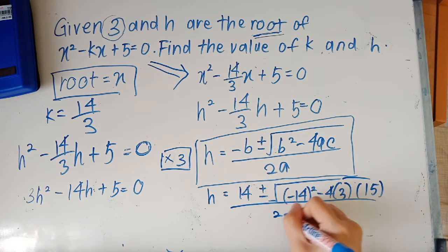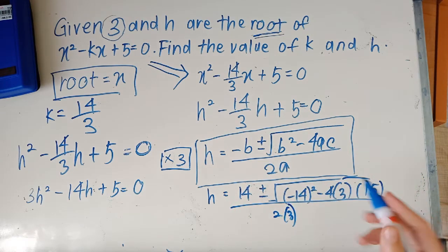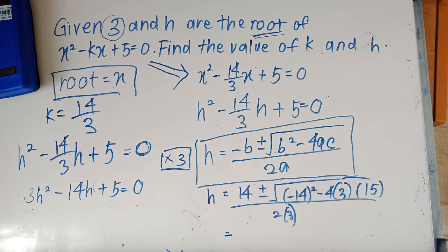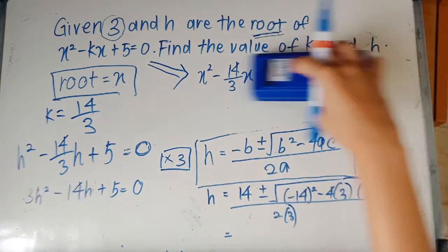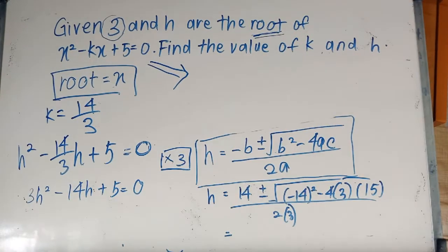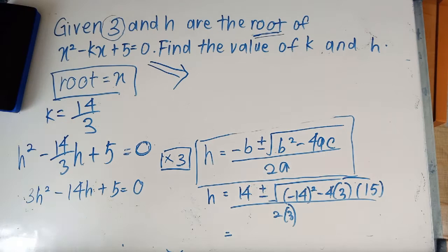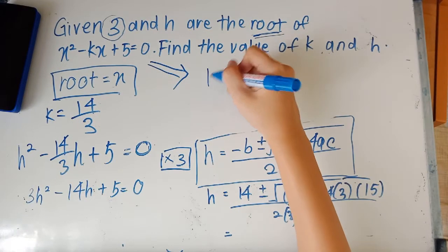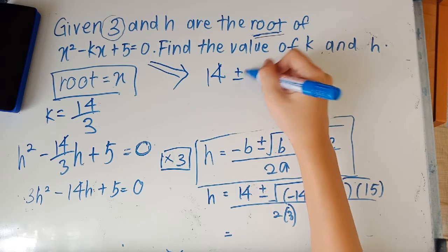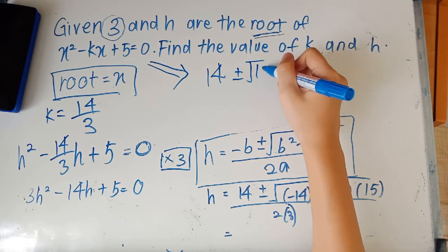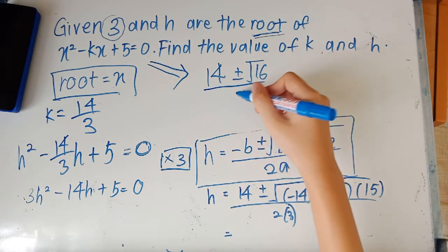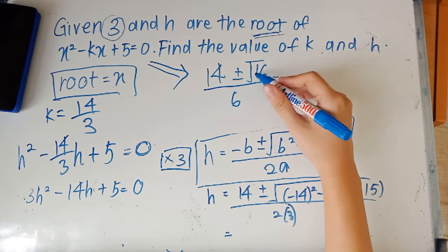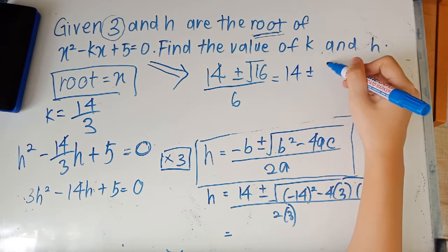So over 2a, and you might want to bring up your calculator to calculate this value inside here. What you have from here is 14 plus minus square root 16. If you type into the calculator you'll find that this is 16.